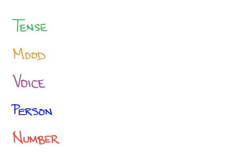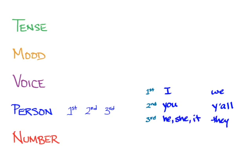I'm going to start with person, which most verb forms have. Greek has first, second, and third person, as does English. First person is when the subject of a verb is closest to the speaker — that is to say, I or we. Second person is a degree away from the speaker, so you or y'all. And third person is yet another degree away from the speaker: he, she, it, or they.